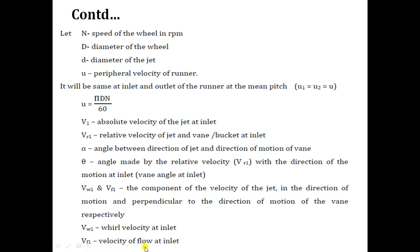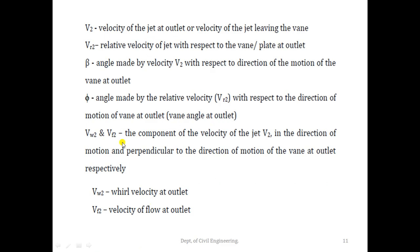v2 is the velocity of the jet at outlet; vr2 is the relative velocity of jet with respect to the vane at outlet; β is the angle made by the absolute velocity v2 with respect to the direction of motion of the vane at outlet; φ is the angle made by relative velocity vr2 with respect to the direction of motion of the vane at outlet; vw2 is the whirl velocity at outlet; vf2 is the velocity of flow at outlet.